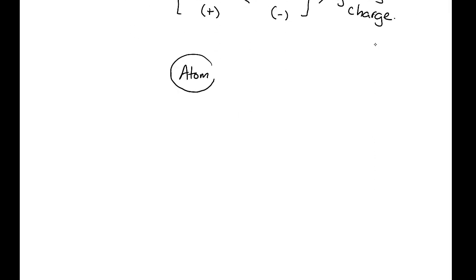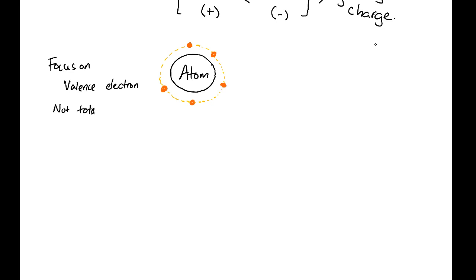It is a scale. We know that an atom always wants to take in electrons or give electrons away in order to achieve a stable octet. To study electronegativity, you have to focus on valence electrons, not the total electrons, because it is about the valence shell.